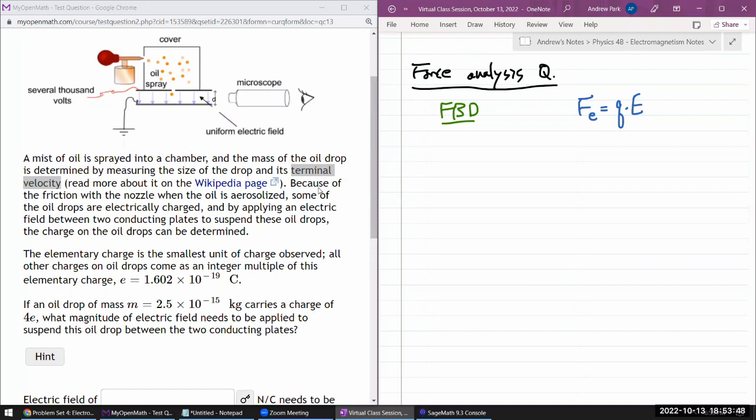So you consider an oil droplet somewhere in this region. Let's consider the forces on it. There's going to be gravity pulling it down. If it's suspended between the two conducting plates, it's resting, acceleration is zero. There must be some upward force. That must be the electric force.